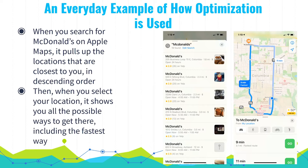We wanted to show you an everyday example of how optimization impacts your daily life. When you search for McDonald's on Apple Maps, it pulls up the locations closest to you in descending order. When you select your location, it shows you all possible ways to get there, including the fastest route. Apple Maps uses linear optimization to give you the fastest way to get to your nearest McDonald's.